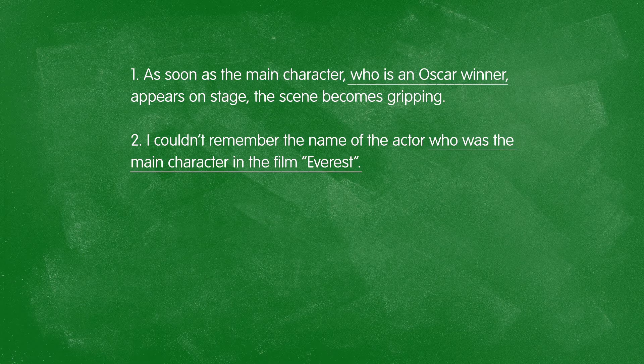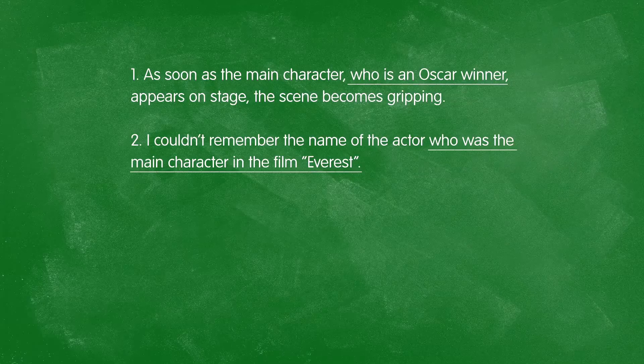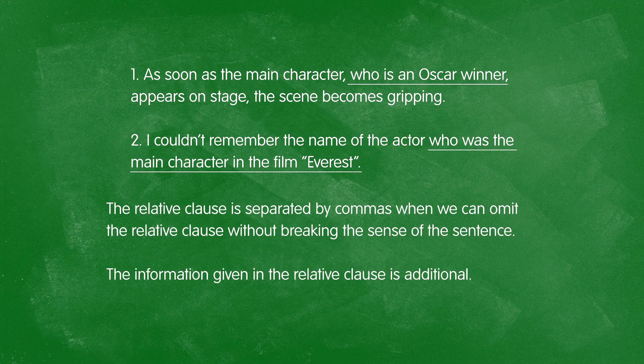However, if I say: I couldn't remember the name of the actor who is the main character in the film Everest — I can't leave out that last piece of information. If I simply say 'I couldn't remember the name of the actor,' I don't know which actor I'm talking about, and neither does my listener. So it is necessary to include the relative clause, and because it's necessary, I do not separate it from the rest of the sentence with commas.